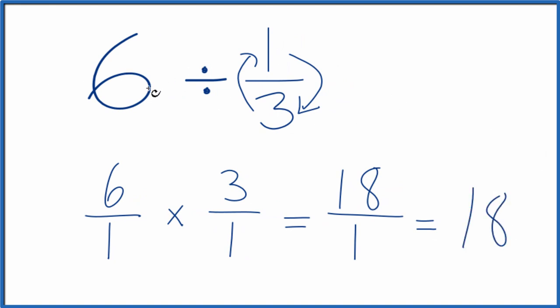So in answer to our question, 6 divided by 1/3 equals 18. If you take 18 and you multiply it by 1/3, you'll get 6.